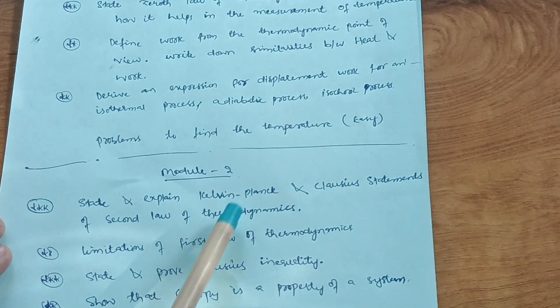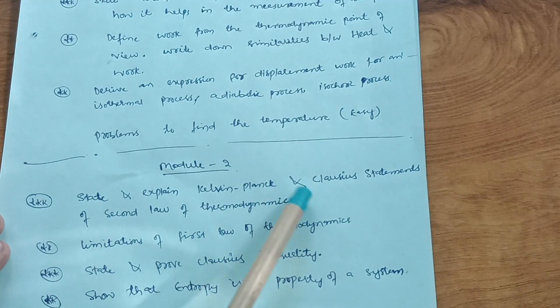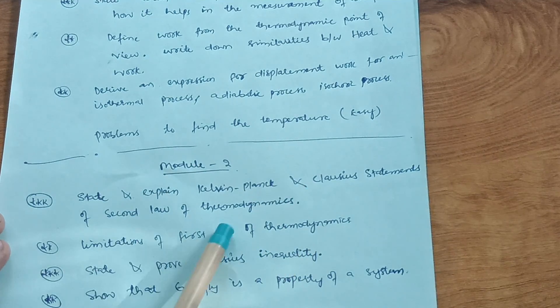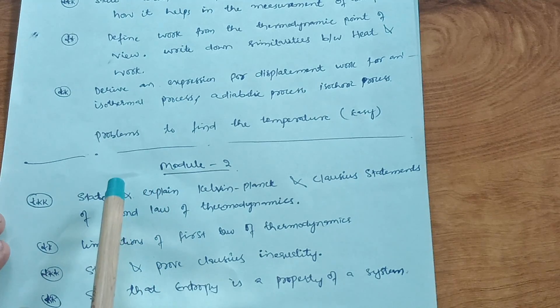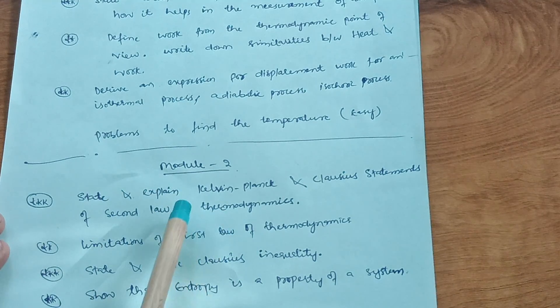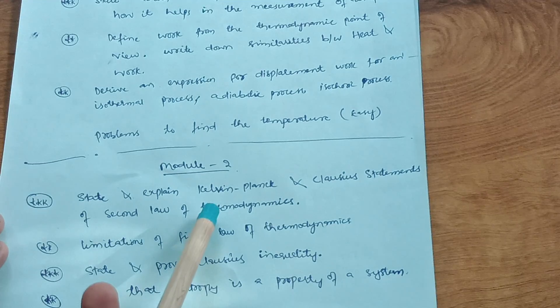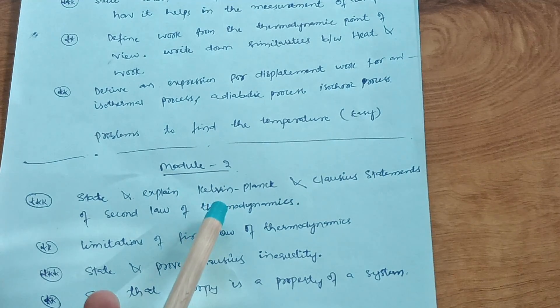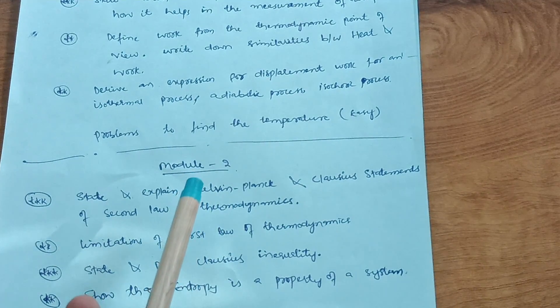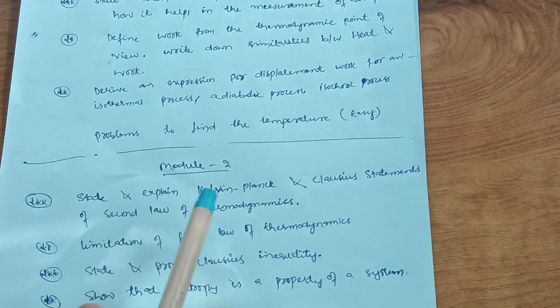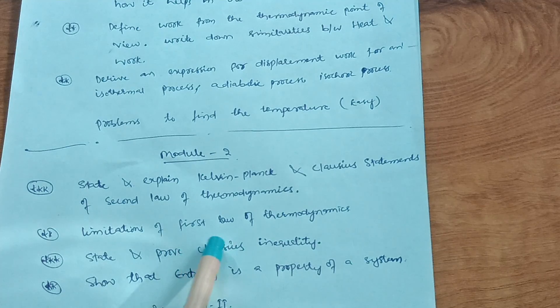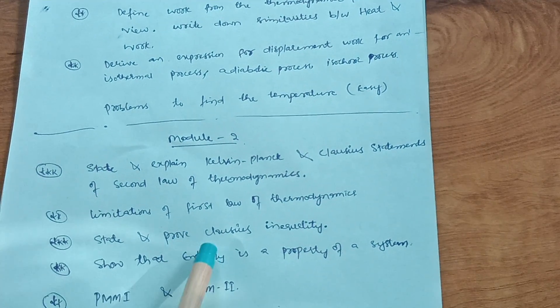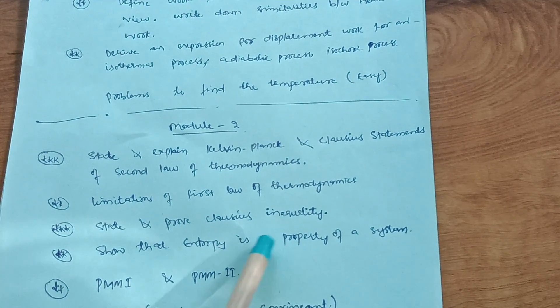In Module 2, state and explain Kelvin-Planck and Clausius statement of second law of thermodynamics. This is the most important question, always asked in VTU examination, even in the 2018 scheme. Also cover limitations of first law of thermodynamics and state and prove Clausius inequality.